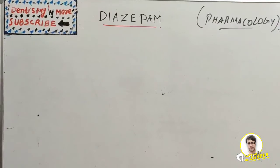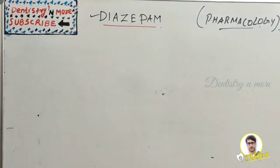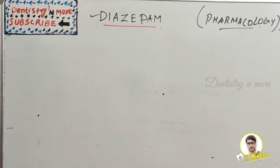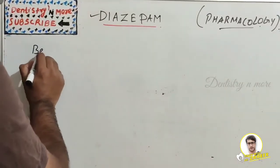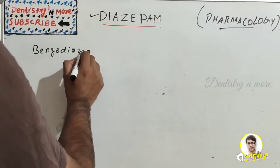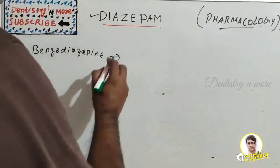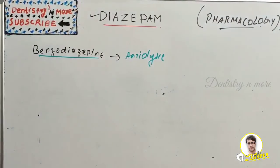Hello everyone, welcome back to another session at Dentistry & More in Pharmacology. Today's topic is Diazepam. Last session we finished nitrates — its uses, side effects, and pharmacokinetics. Today we have Diazepam, which is a medicine of the benzodiazepine family, and it acts as an anxiolytic — a commonly used drug in the benzodiazepine family.